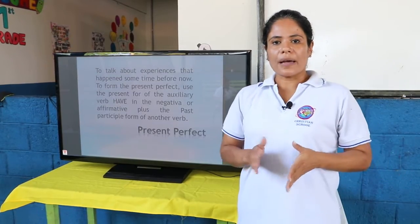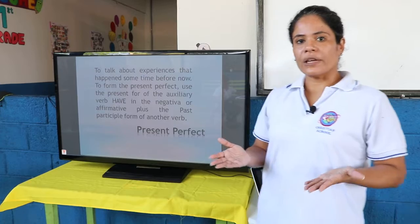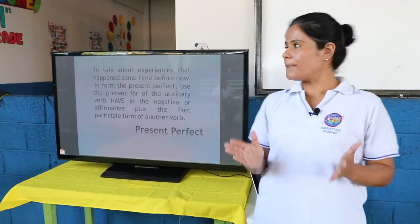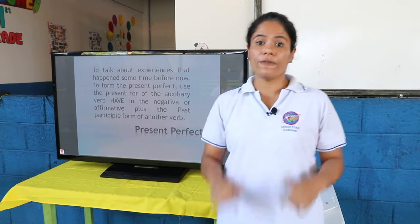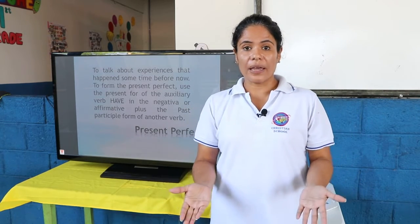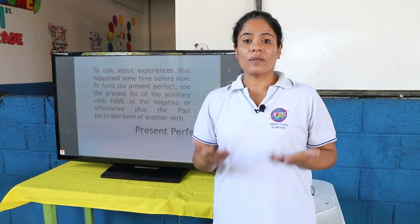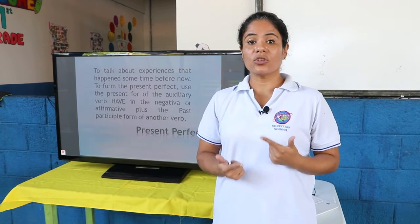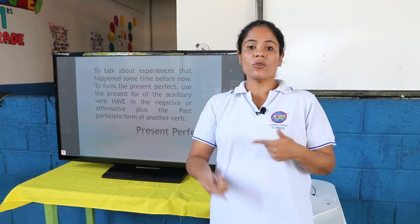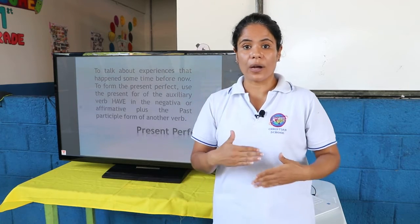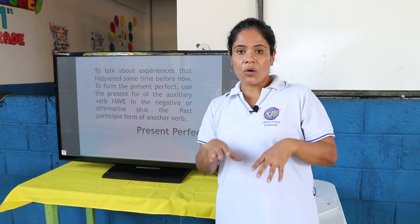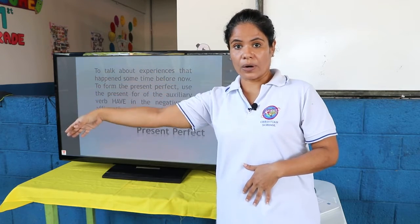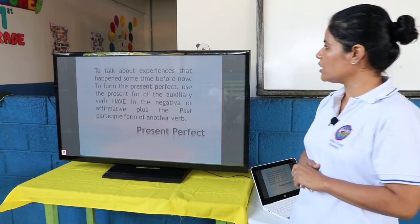When we talk about the present perfect, we are talking about the experiences that happened sometimes before now. Lo que quiere decir cuando hablamos nosotros en presente perfecto es que estamos hablando de una experiencia que tuvimos antes de ahora, una experiencia que nos tocó vivir antes de ahora.